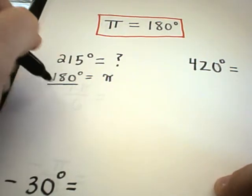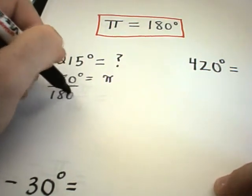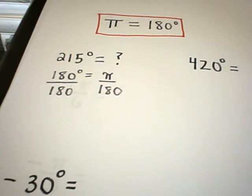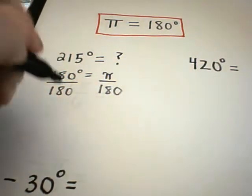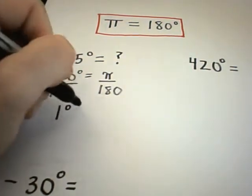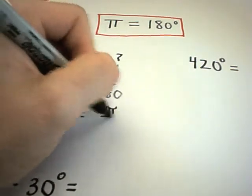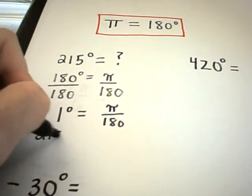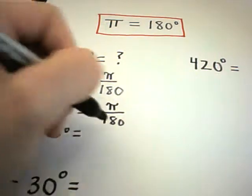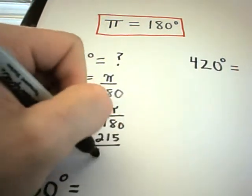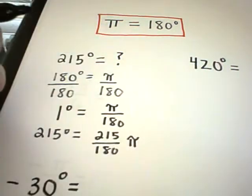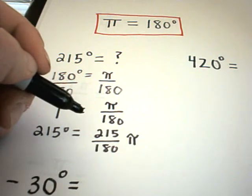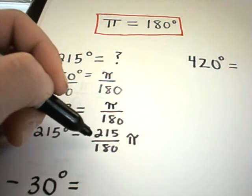And then all I'm going to do is I'm going to divide both sides by 180. And so on the left side again you get 1 degree, you have pi over 180 on the right side. Well, I want to get 215, so you simply multiply both sides by 215. You'll get 215 over 180 pi. And let's see, what is 215 divided by 180? I should have thought about this one a little bit more.